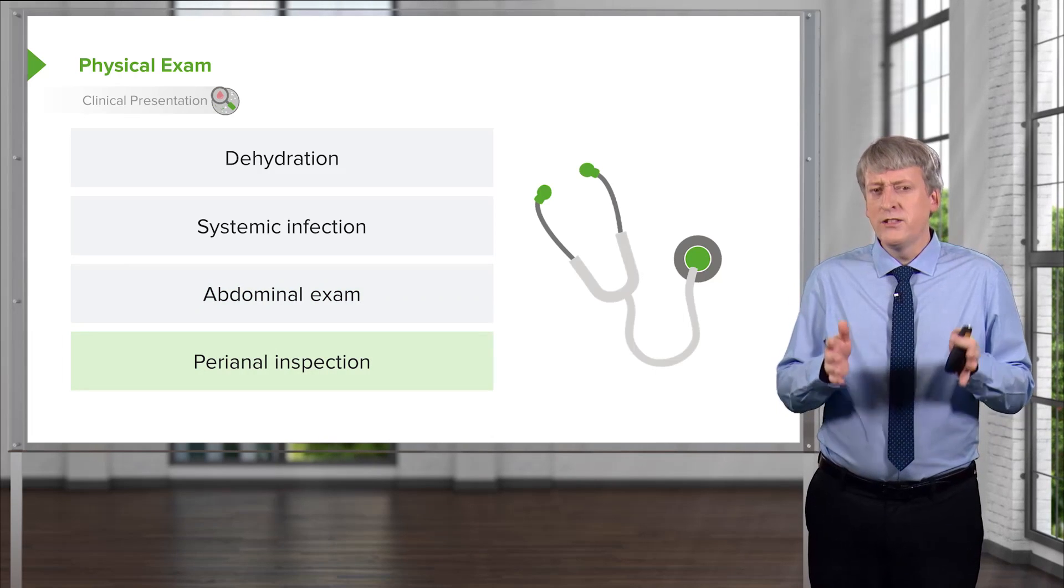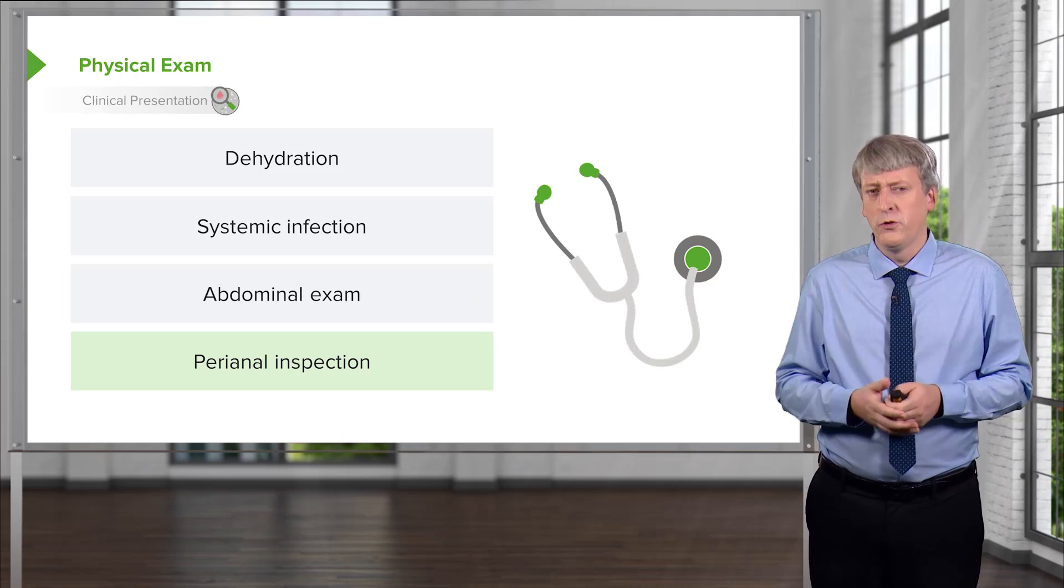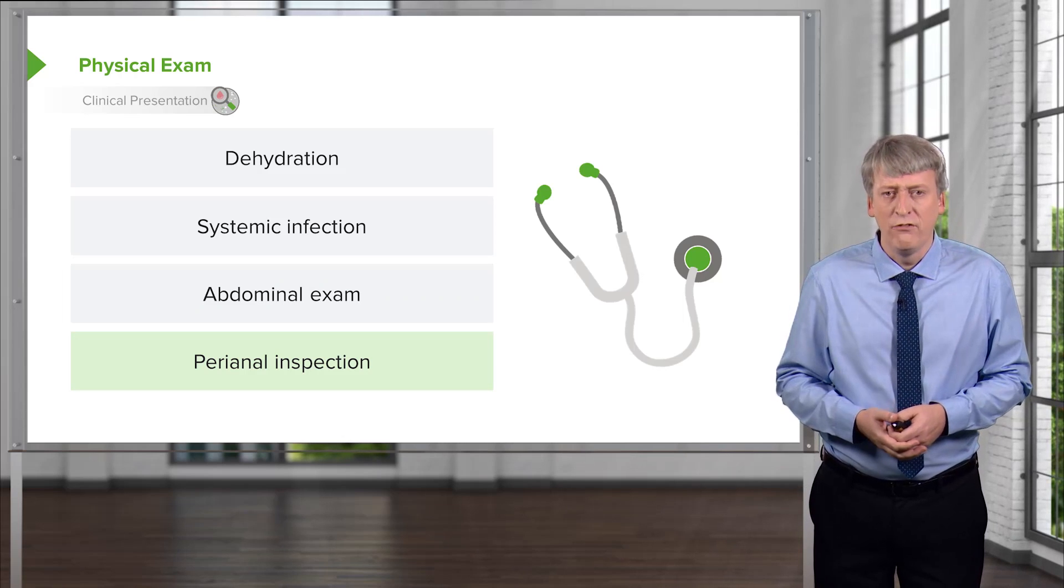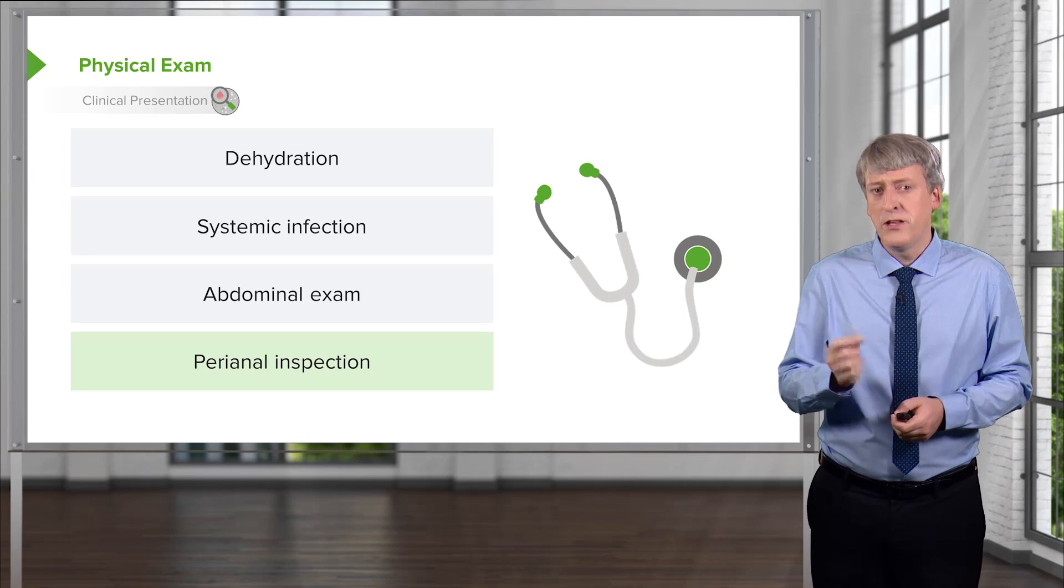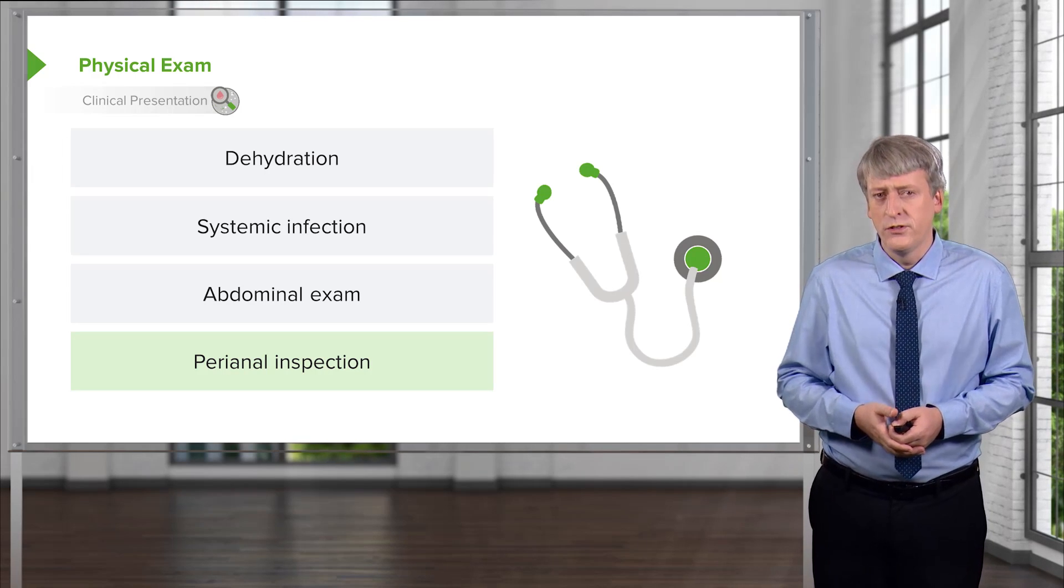A perianal inspection is important on children, especially if you're concerned about inflammatory bowel disease. Sometimes a rectal tag or fissure is the best clue you have that the child has Crohn's disease.